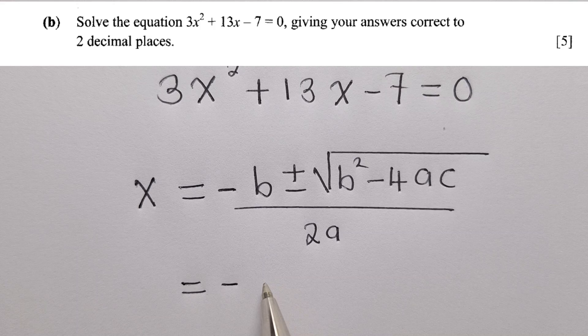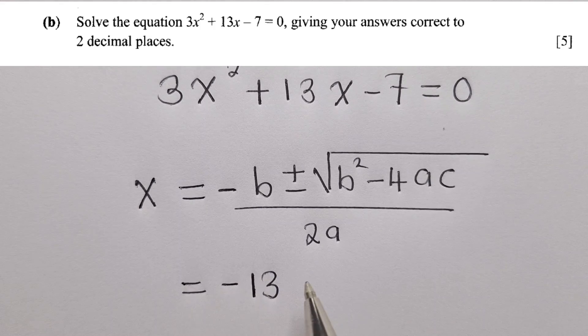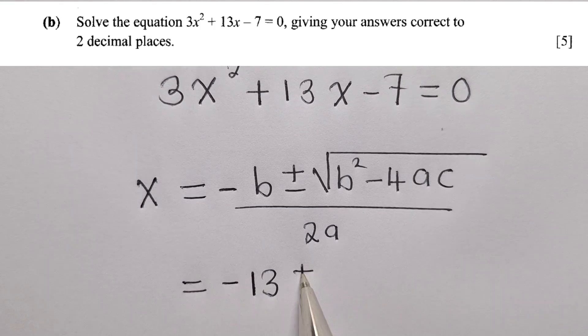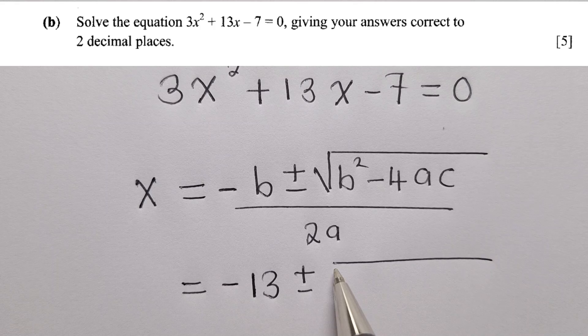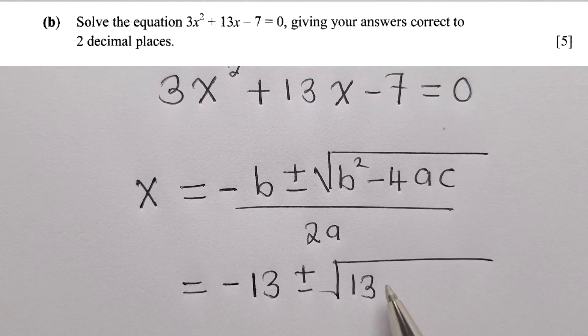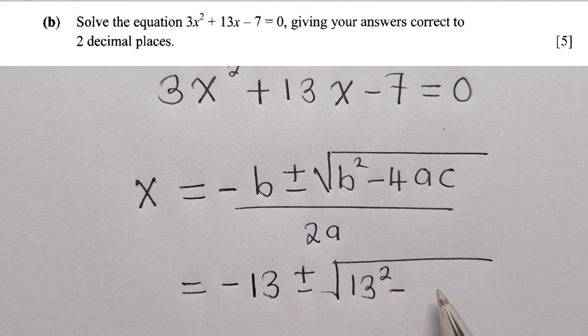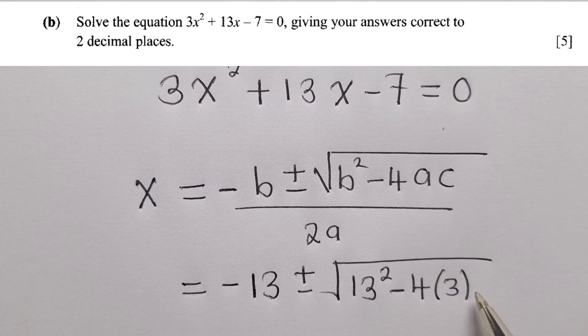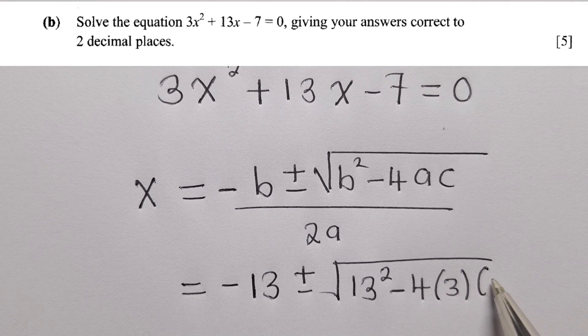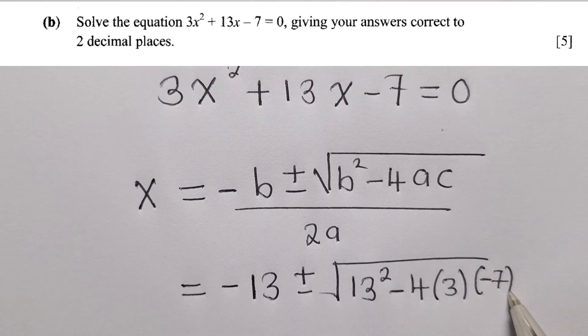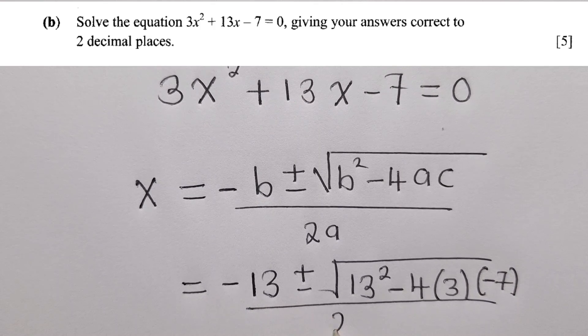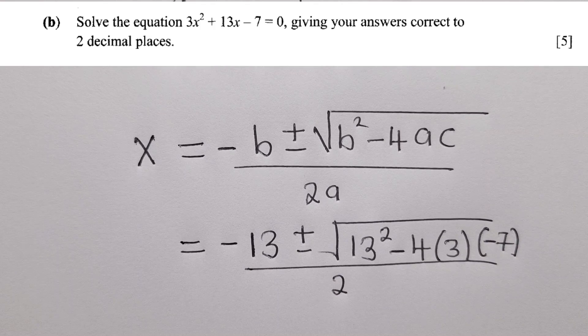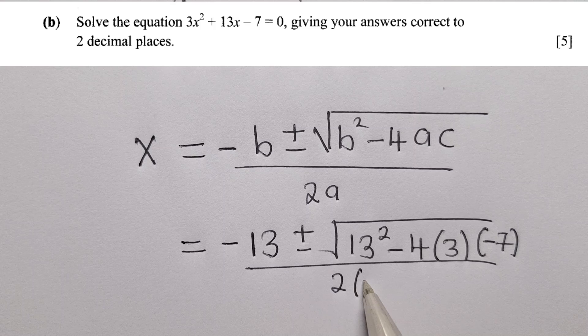We shall have negative 13, because our b is 13, plus or minus square root over 13 squared minus 4. A, of course, we know it's 3. And c, it's negative 7. So everything over 2. Our a, of course, we know that it's 3.